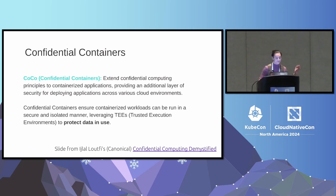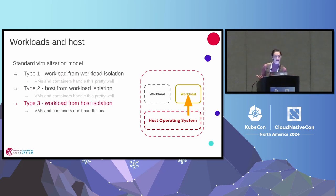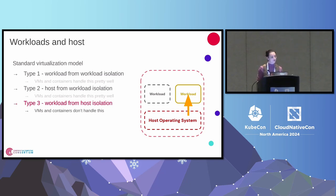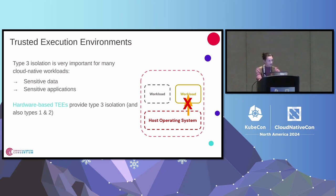If you're a visual thinker, there are three types of isolation to consider from Mike Bursell's slides. Type one isolation is workload-from-workload isolation — multi-tenant isolation. Type two is host-from-workload isolation — virtual machines and containers are very good at this. Then there is type three: workload-from-host isolation — we're talking the cloud provider at this point. Virtual machines and containers by their very nature cannot do this. Hardware-based trusted execution environments can do this, and they give you type one and type two security implicitly.